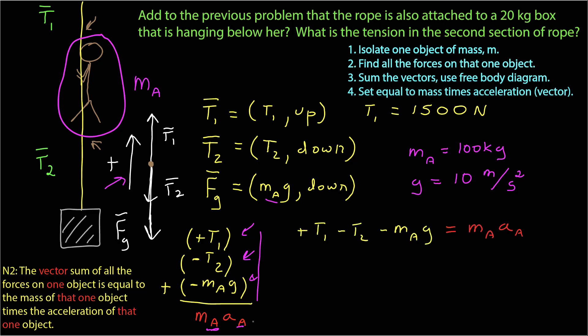This gives me a scalar equation: T1 minus T2 minus m sub a times g equals m sub a times the acceleration of Alice. I know T1 and I know m sub a and g, but I don't know T2 — that's what I'm trying to find. I also don't know the acceleration of Alice. I have two unknowns and only one equation, and I need the same number of linearly independent equations as unknowns to solve.